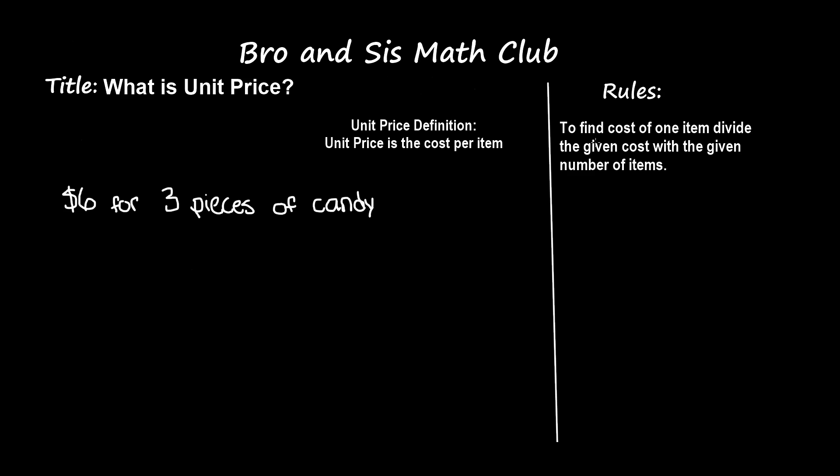cost of one item, divide the given cost by the given number of items. We know that unit price is the cost per item, right? One item. So what we need to do is